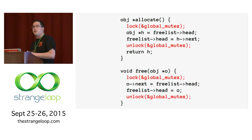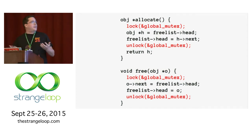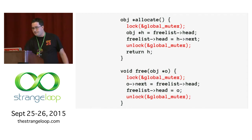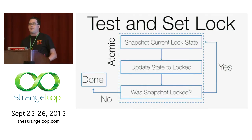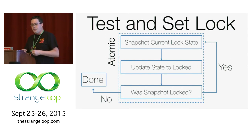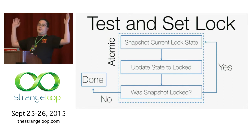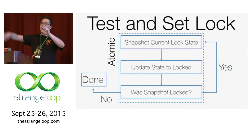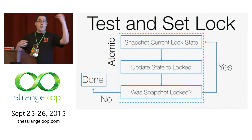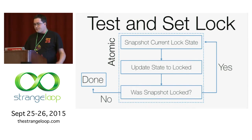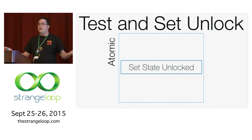Let's look at how a lock itself is implemented, because it's useful to understand the guarantees the lock makes and how it makes them. The kind of lock we'll discuss is a spin lock — specifically a test-and-set spin lock. The way this lock works is it snapshots the state of the mutex and sets the state to locked. If the snapshot was already locked, we didn't acquire it, so we spin. We keep doing that until we see we changed the state from unlocked to locked. If the previous state was unlocked, we've acquired the lock. For unlocking, we just set the state to unlocked.